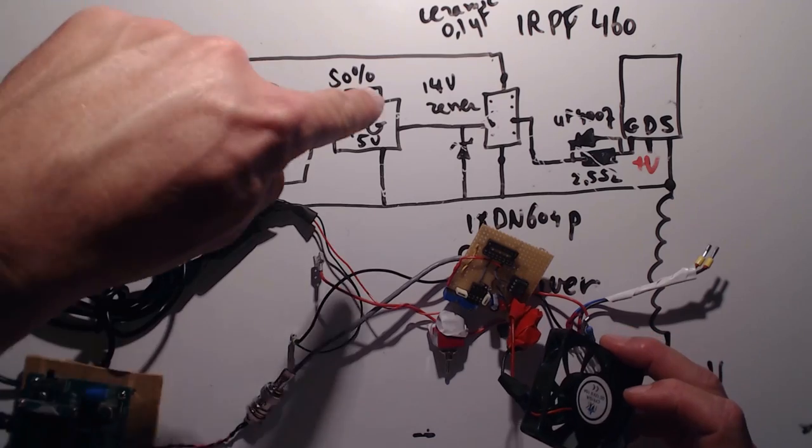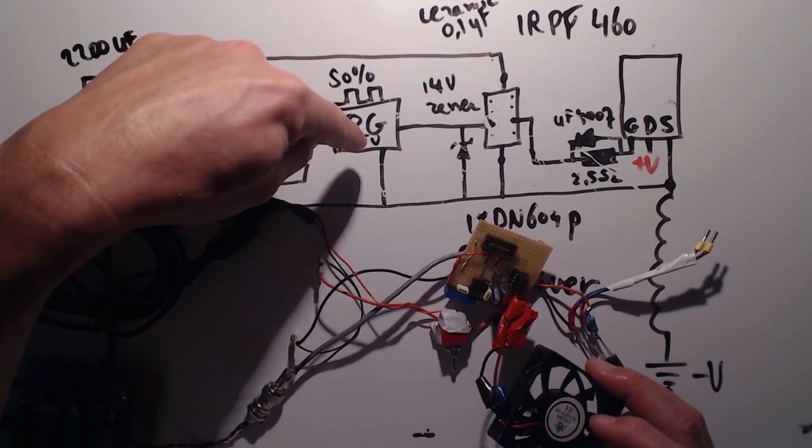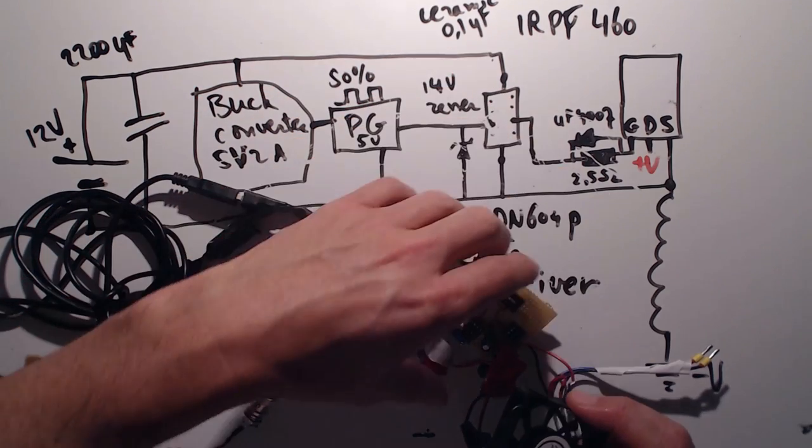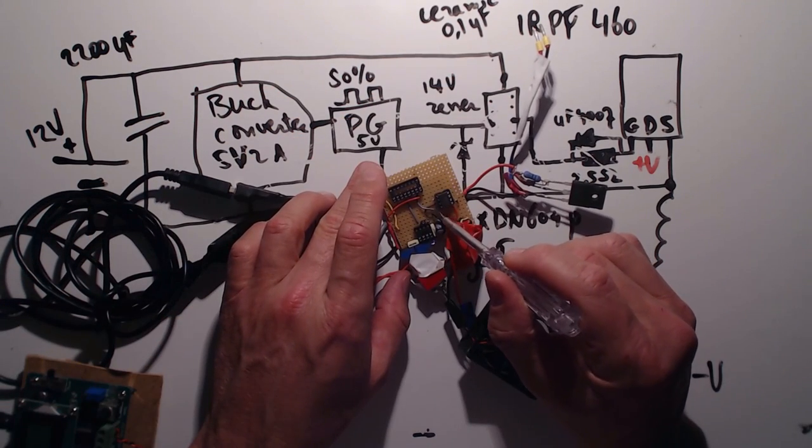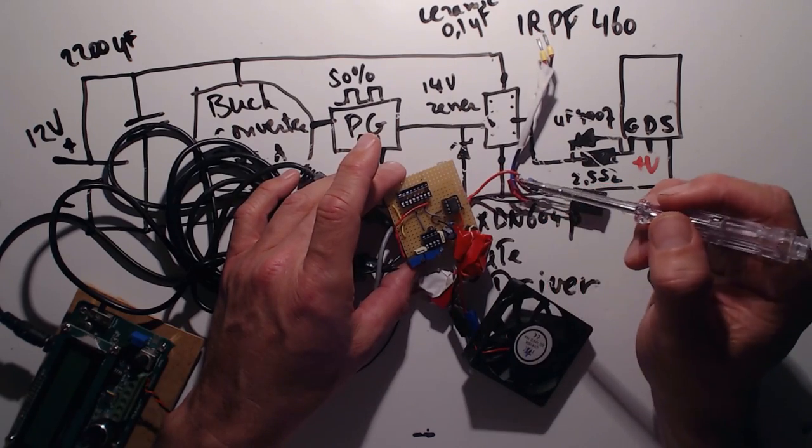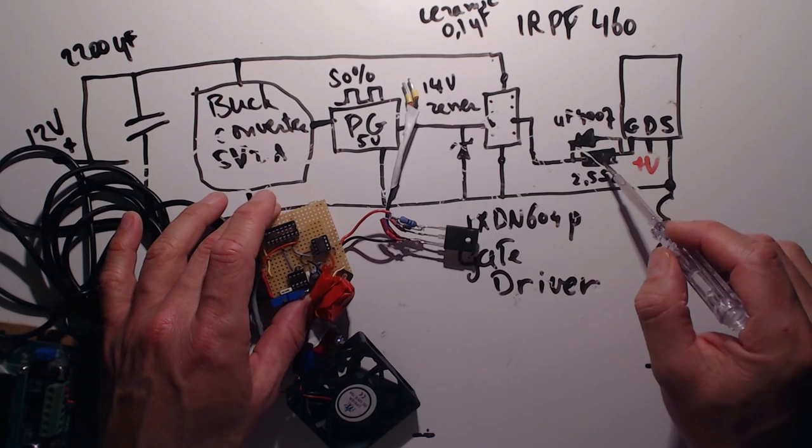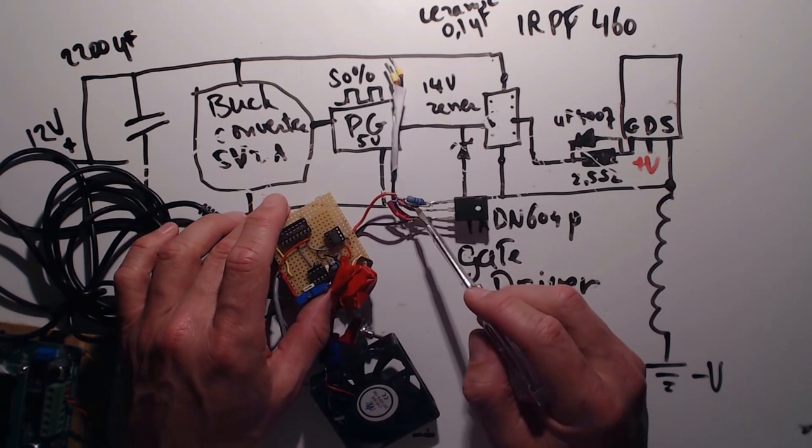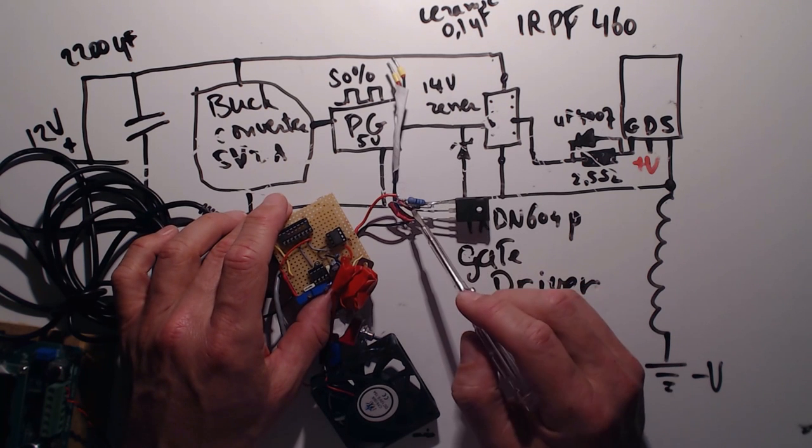So the buck converter is powering the pulse generator. The pulse generator generates the square wave into the IXDN604. And there is a little zener from the input to ground. Here's the capacitor that stabilizes the voltage. And then here, the resistor and the diode. You can see it here. It's on the gate of the MOSFET.